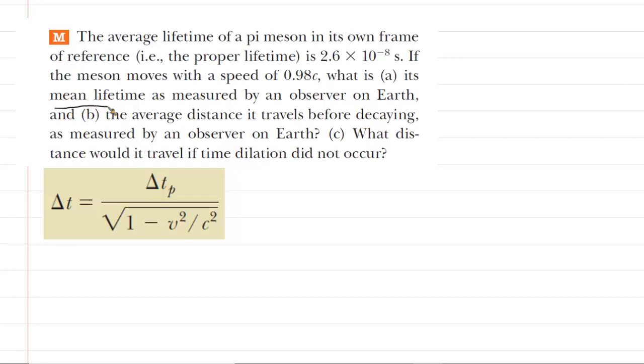In this question, we have to calculate the mean lifetime of a pi meson as measured by an observer on Earth. And we are given two pieces of information to do that. We know the proper lifetime, which we will discuss shortly, is this very brief time interval. And then we know the speed of the pi meson is 98% of the speed of light.